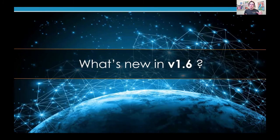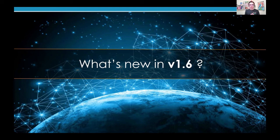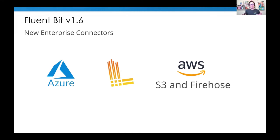Fluent Bit was created in 2015, and we are close to five years. One of the important things to understand is what new things are coming in the project. A few weeks ago, we released Fluent Bit 1.6. One of the major feature sets we shipped are new enterprise connectors — all free to use.